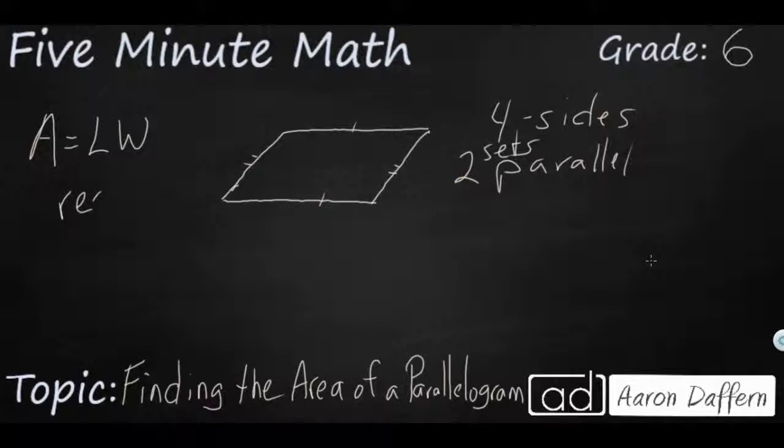Now in case you think that we somehow messed up here, let's just take a look at what this parallelogram is. This parallelogram is a four-sided shape, just like a rectangle, and it has two sets of parallel sides, just like a rectangle. The only difference here is that the rectangle has four square corners, whereas this is slanted.